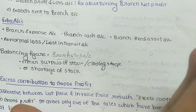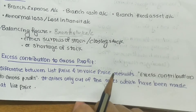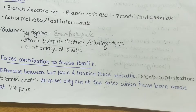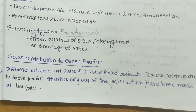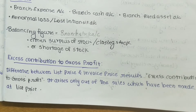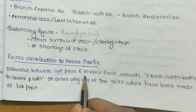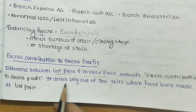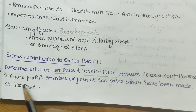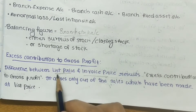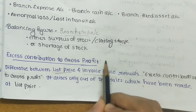These are common points to keep in mind while doing Stock and Debtors Method questions. The next important topic is excess contribution to gross profit, which is critical for Illustration Number Five. Excess contribution to gross profit is the difference between list price and invoice price. For example, if list price is ten thousand and invoice price is five thousand, the difference of five thousand is the excess contribution to gross profit.